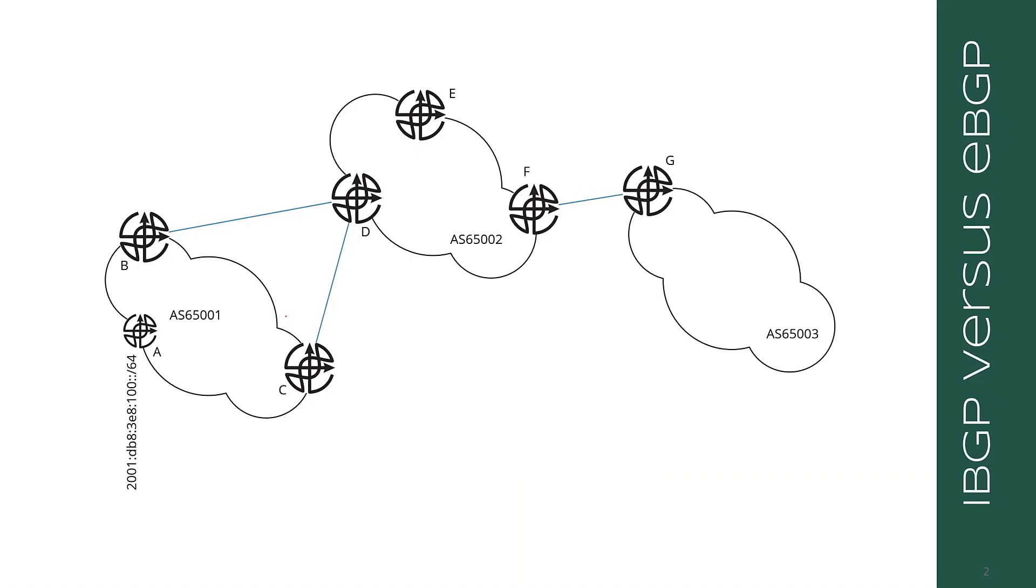The first thing to note is that next hop is different between eBGP and iBGP. If I have this 100 colon colon slash 64 route being advertised from A to B and to C, what will B and C learn as the next hop towards this destination?